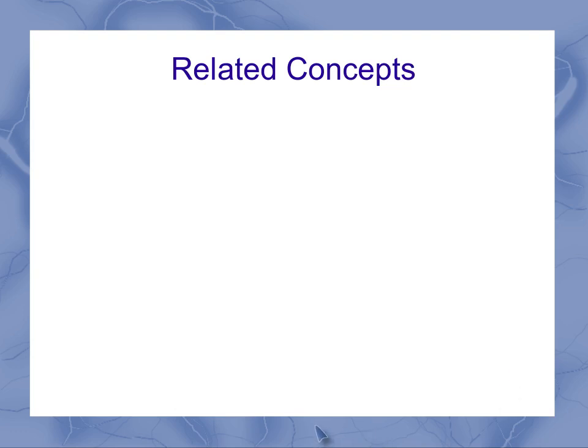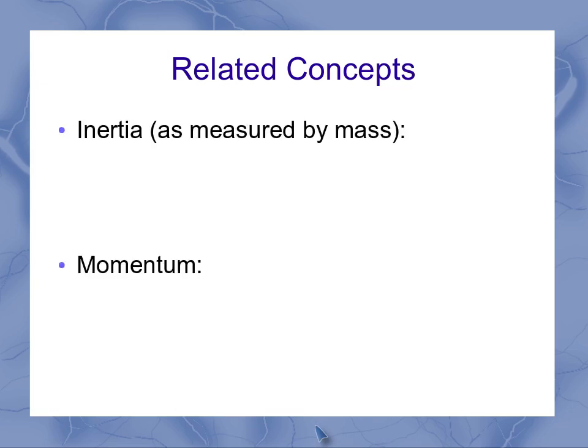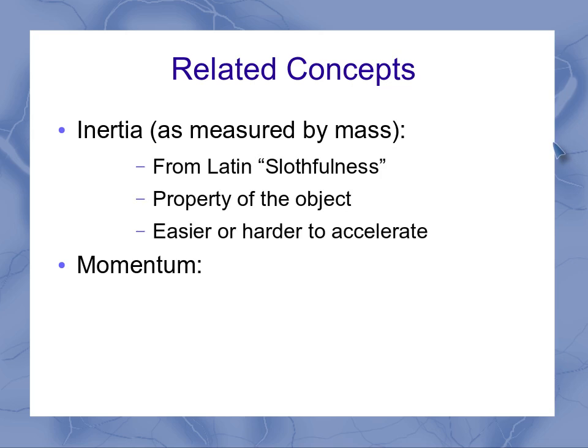Now to help clarify this concept of momentum, let's relate it back to some other concepts. Particularly, let's relate it to inertia. And if you remember, inertia was measured by mass. Well, inertia is actually a word that comes from the Latin for slothfulness. And it was a property of the individual object. Some objects are harder to accelerate. Those would be the very slothful ones. And some of them are much easier to accelerate. So depending on my mass, it affected my acceleration.